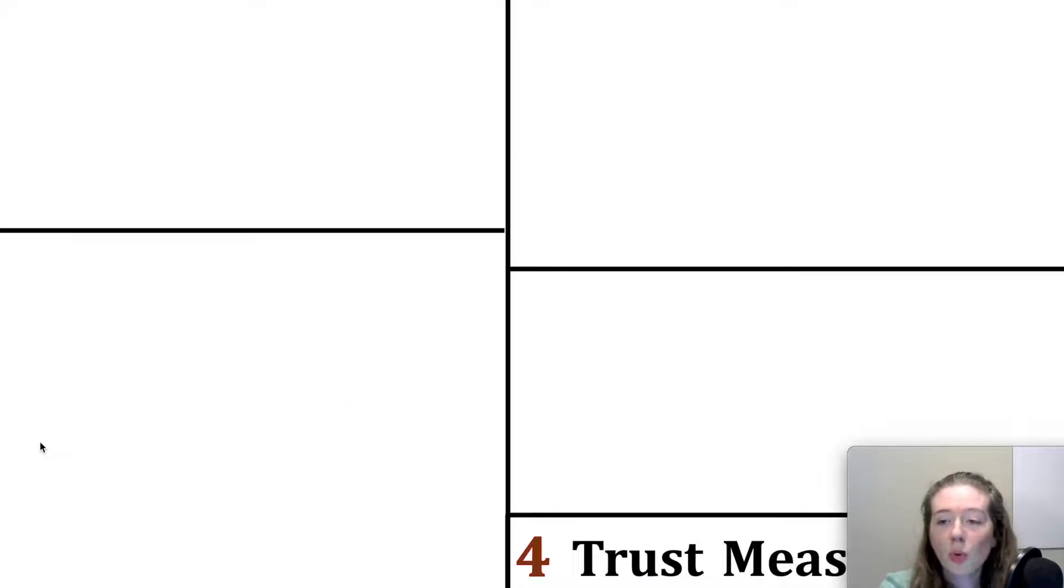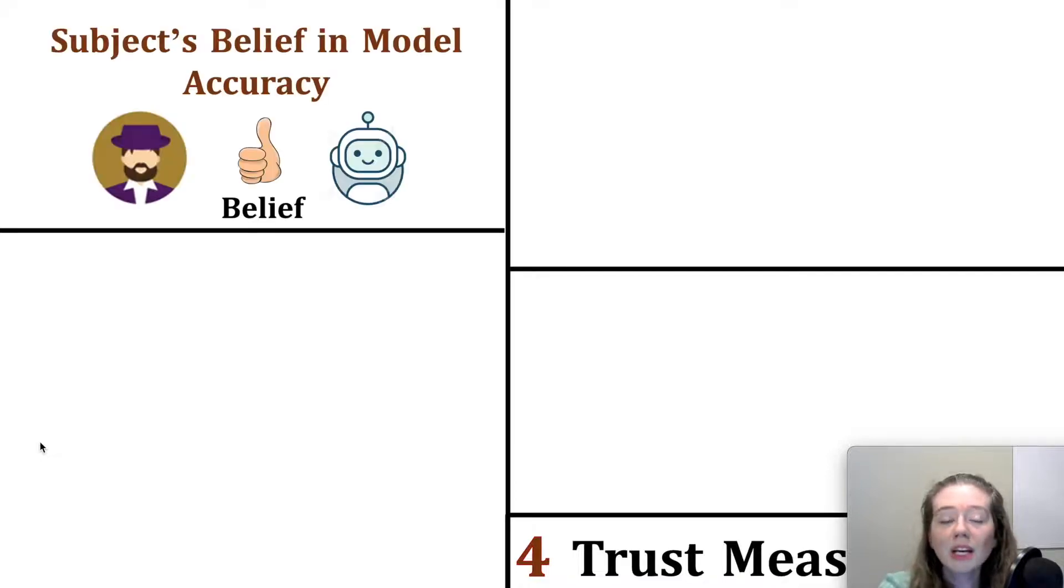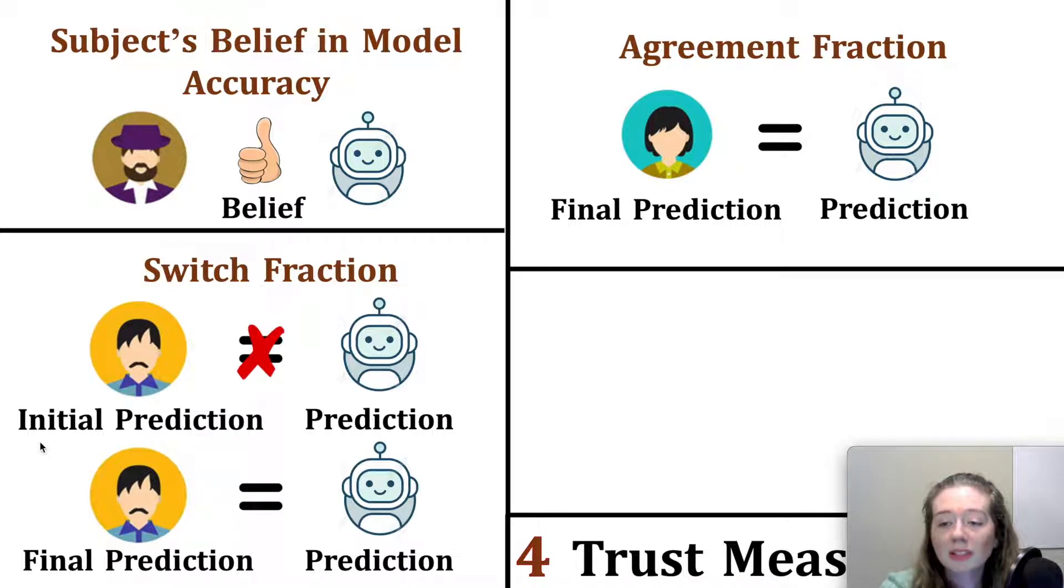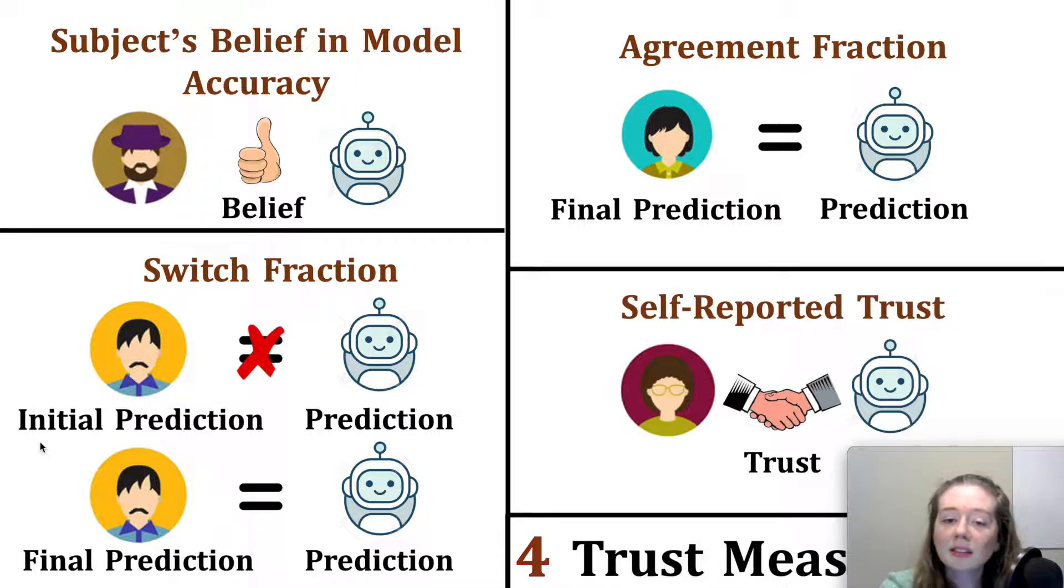We used four different measures to quantify the subject's trust in the machine learning model, and we computed the values of these measures separately for each phase: subject's belief in model accuracy, representing on average how much belief they had in the model's predictions being correct; agreement fraction, representing how often the subject's final prediction agreed with the model's; switch fraction, representing how often the subject initially disagreed with the model but switched their final prediction to agree with the model's; and self-reported trust, which is the level of trust that the subject self-reported to have at the end of the experiment.